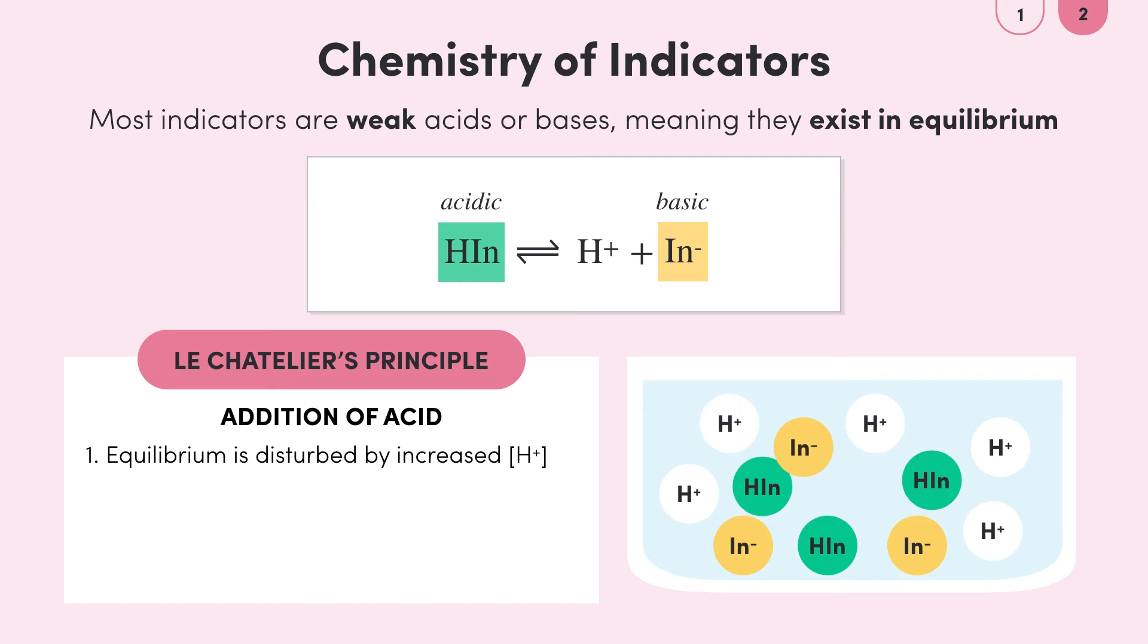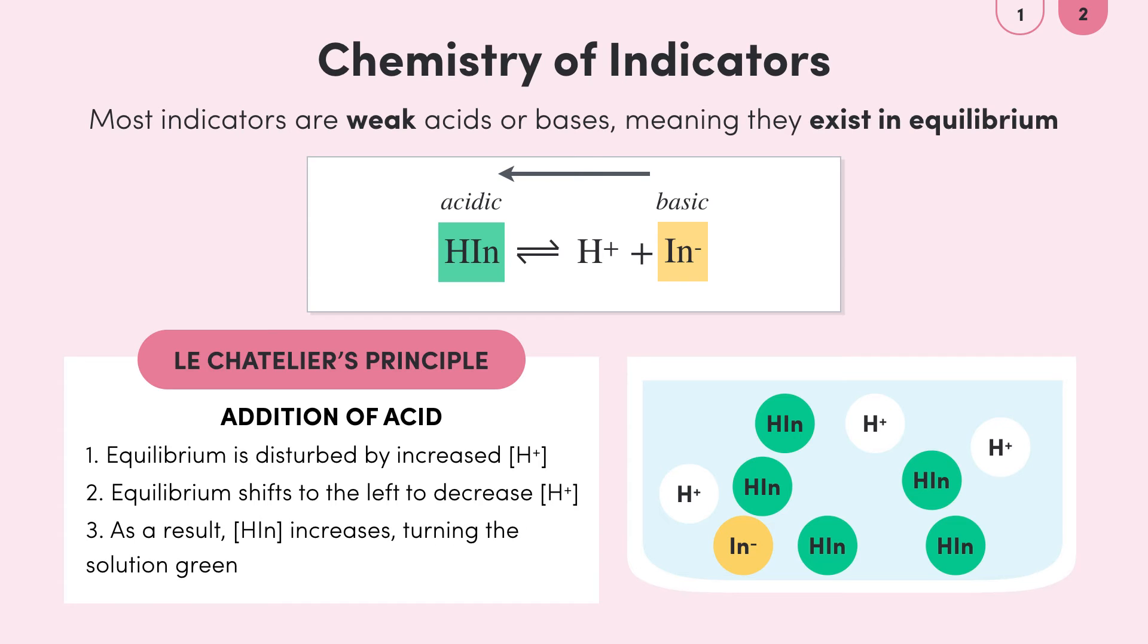According to Le Chatelier's principle the equilibrium will shift towards the left to reduce the added concentration of hydrogen ions and minimize the disturbance. This leads to an increase in the concentration of the green HIn molecules making the solution turn green.